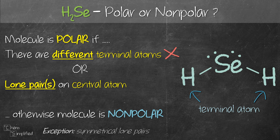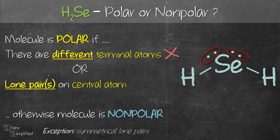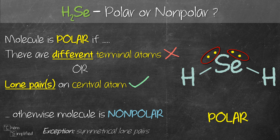The second criteria is that there has to be a lone pair on the central atom. On selenium (Se), there are two lone pairs, so the second criteria is fulfilled. That means H₂Se is a polar molecule.